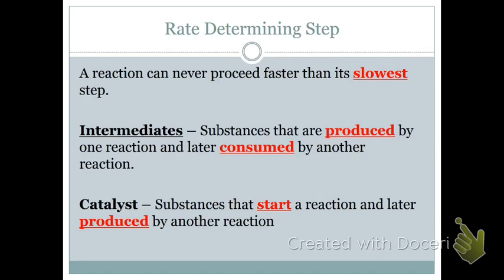Intermediates will not appear in the overall equation, and they will not appear in the rate law. So if it's an intermediate, we do not include it in the rate law, and it's never in the overall balanced equation, because intermediates are produced and then consumed.